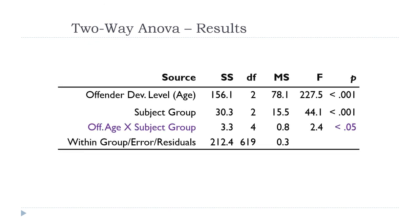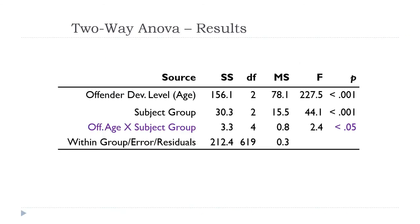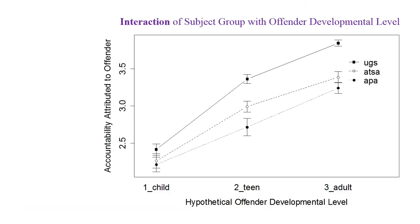Now it gets a little harder to explain — this is the interaction effect: offender age by subject group. That X is usually pronounced 'by,' and it's an interaction effect or interaction term. This is the main effect term, this is the main effect term, and this is the interaction term. There's a lot of language to statistics, and ANOVA especially has its own.